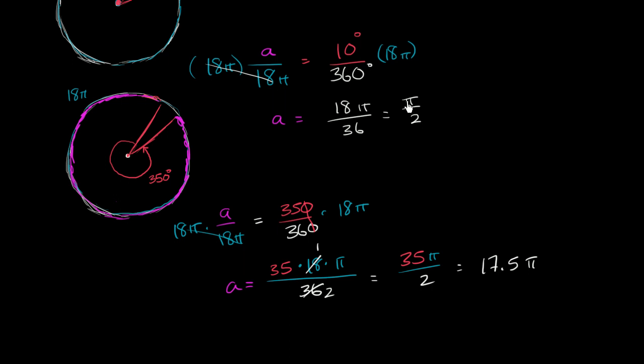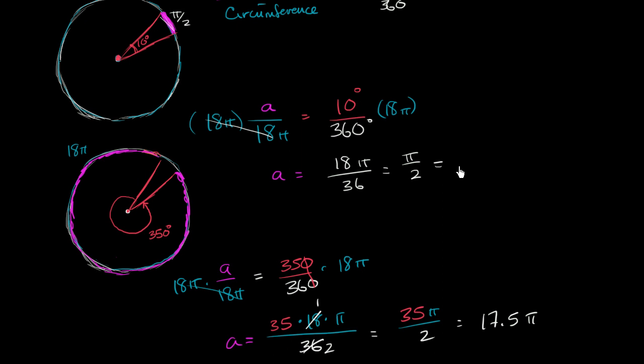Now, does this make sense? This right over here, this other arc length, when our central angle was 10 degrees, this had an arc length of 0.5π. So when you add these two together, this arc length and this arc length, 0.5 plus 17.5, you get to 18π, which was the circumference, which makes complete sense, because if you add these angles, 10 degrees and 350 degrees, you get 360 degrees in a circle.